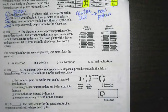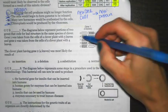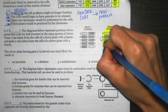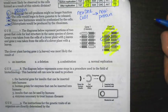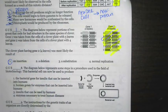The diagram below represents portions of two genes that code for leaf structures in the same species of clover. Gene one was taken from the cells of a clover plant with three leaves. And gene two was taken from the cells of a clover plant with four leaves. The clover plant having gene two, four leaves, was most likely the result of. So looking here, look at the code, G-A-T-T-C, G-A-A-T-T-C. So actually what wound up happening was that there looks like there's some sort of addition. Now here, there's nowhere to say addition, but it does use the word insertion. If you insert it, you've added it. So that's going to be number one.